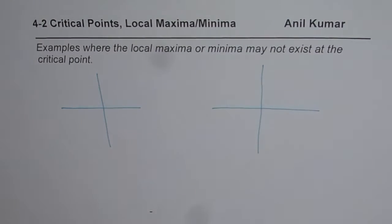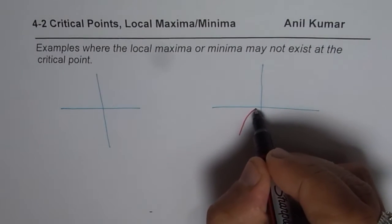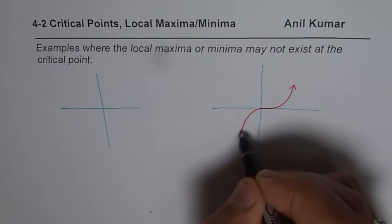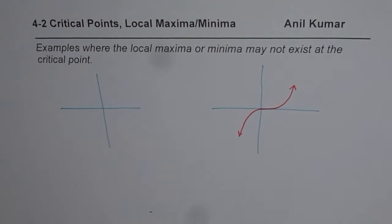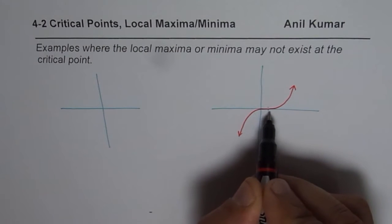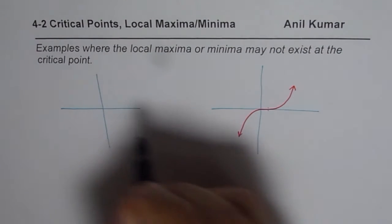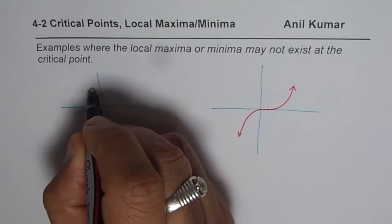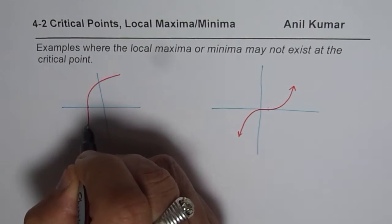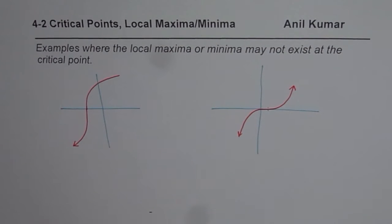The two cases we are talking about: one where the derivative could be horizontal, like a cubic function — at that point the derivative is going to be zero, but it is neither a maximum nor a minimum. Similarly we could also have a cube root function whose graph may look like this. I am drawing them to make clear how we can have a critical number and not have a maximum or a minimum.